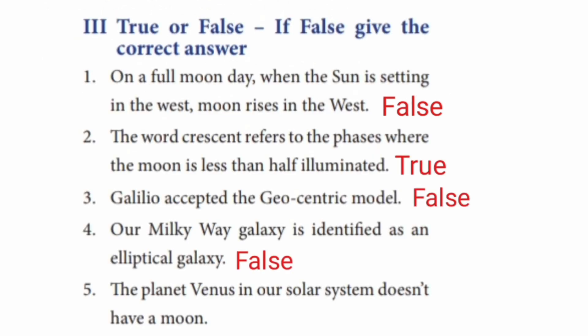Question 15: The planet Venus in our Solar System doesn't have a Moon — this is True.